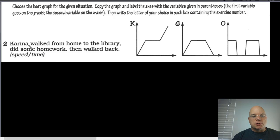The situation for number two: Karina walked from home to the library, did some homework, then walked back. The variables in parentheses are speed and time. The first variable goes on the y-axis, so my y-axis is representing speed, and the x-axis, the independent variable, is time. As it often is, time is very often on the x-axis, not always but very often.